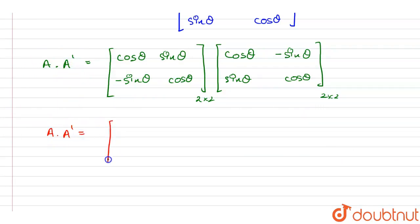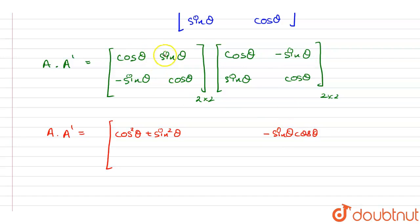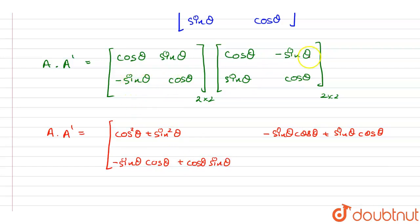Multiplying row by column: the first element is cosθ·cosθ + sinθ·sinθ = cos²θ + sin²θ. The second element of the first row is cosθ·(-sinθ) + sinθ·cosθ = -sinθcosθ + sinθcosθ. For the second row: -sinθ·cosθ + cosθ·sinθ, and then (-sinθ)·(-sinθ) + cosθ·cosθ = sin²θ + cos²θ.